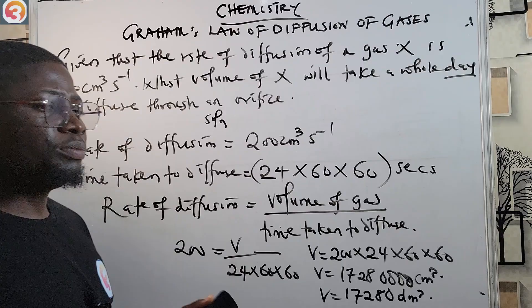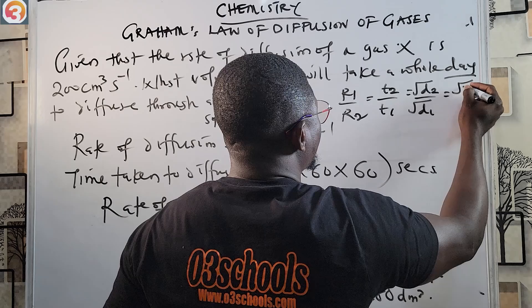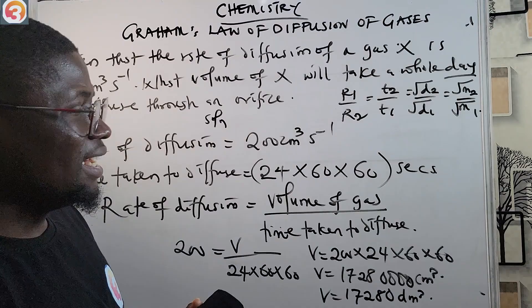Remember the key formula: R1/R2 = t2/t1 = √(d2/d1) = √(m2/m1). That is where we round up the topic on Graham's Law of Diffusion. In the next episode we will move on to another topic. Thank you for watching and I'll see you in the next class.